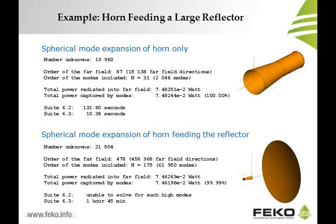A cylindrical horn antenna in front of a parabolic reflector requires order 175 modes, resulting in about 62,000 modes. In FECO Suite 6.2 or earlier, such a spherical mode decomposition was impossible due to numerical instabilities from the high mode order. In FECO Suite 6.3 it is now possible, taking just under 2 hours on the test computer.